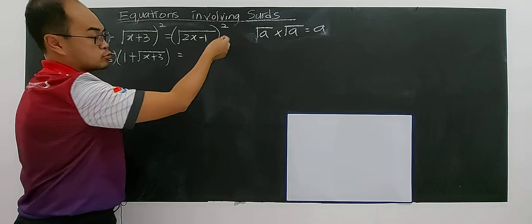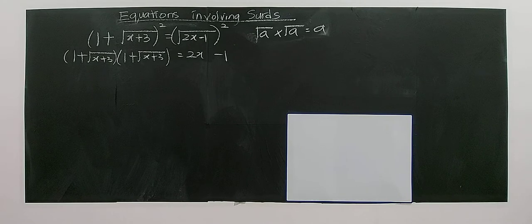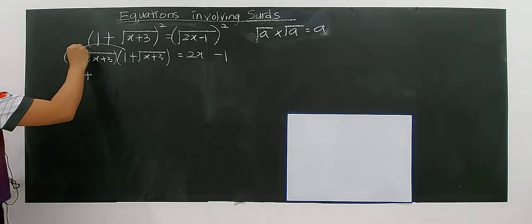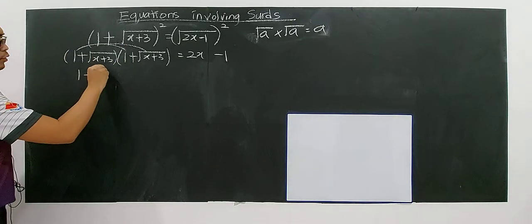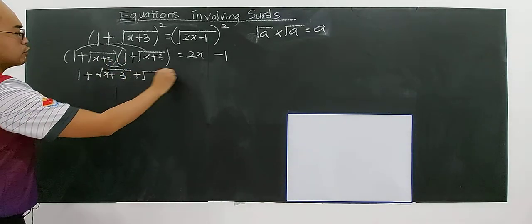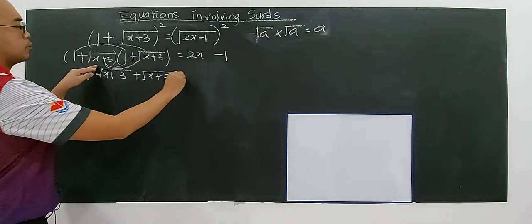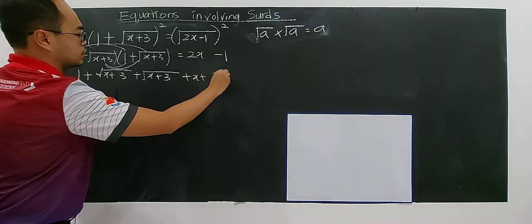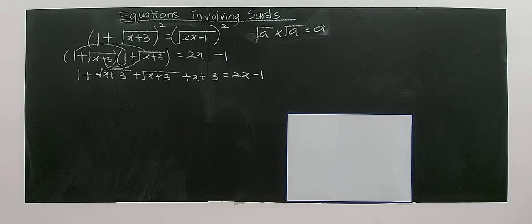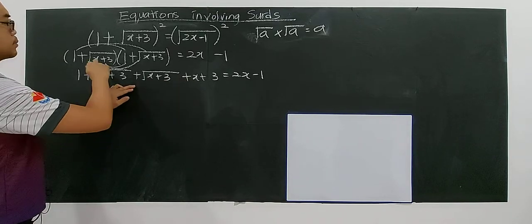For this case, if you square the left side you will get 2x minus 1, right? Only one single surd on the right hand side. So this side you have to expand. You have 1 plus square root of x plus 3, plus square root of x plus 3.